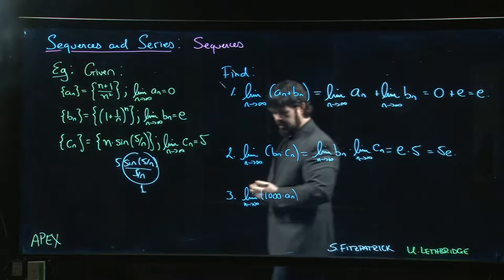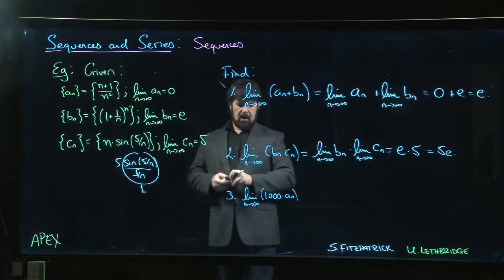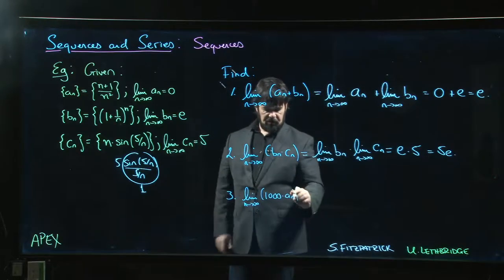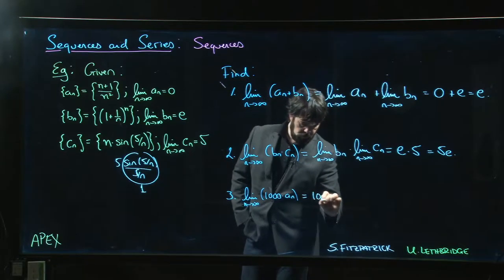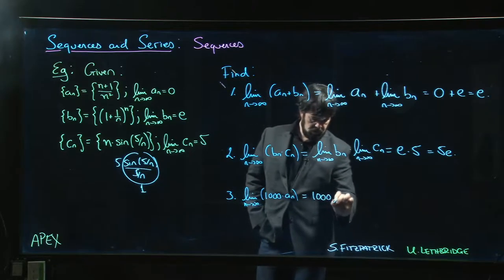And last one we have a constant multiple. So if you have a constant multiple you can bring it outside the limit. So this is one thousand times the limit as n goes to infinity of a_n.